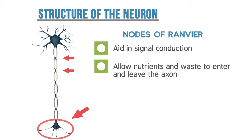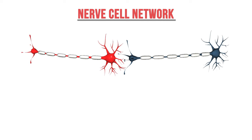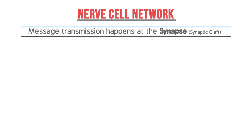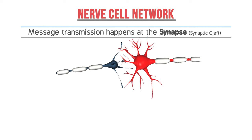Finally, at the end of the axon, are extensions that branch off to form several axon terminals. Now that we've covered the structure of the neuron, let's talk about how neurons come together to form a nerve cell network. Remember, neurons are supposed to send messages to each other, but how exactly does this happen? Message transmission happens at the synapse, or synaptic cleft, which is the junction between one neuron's axon terminals and another neuron's dendrites.